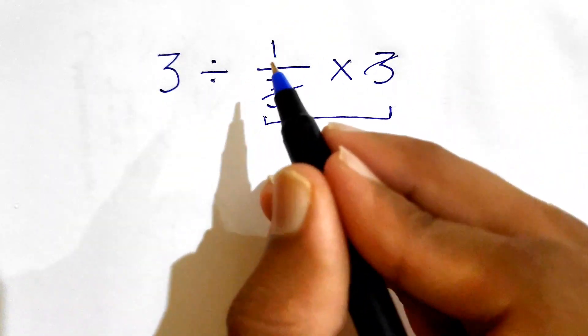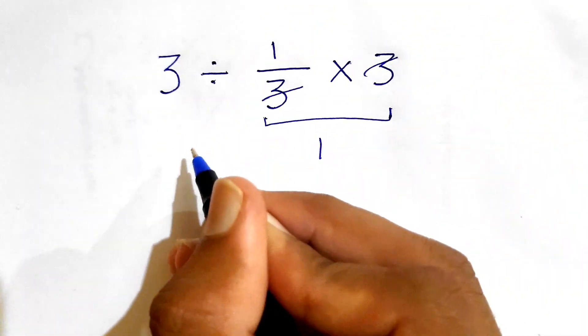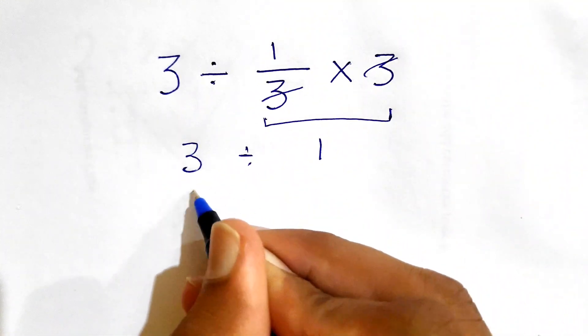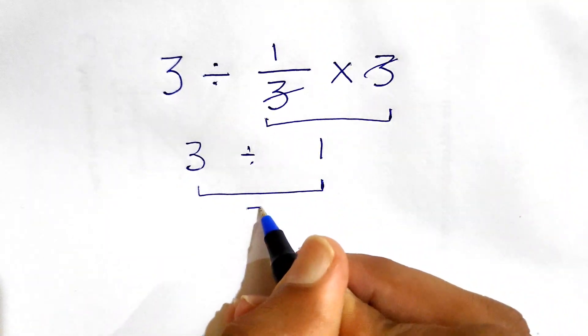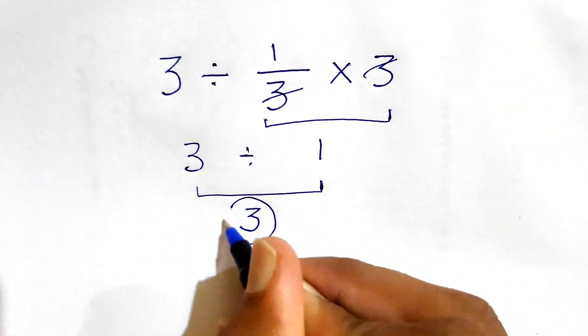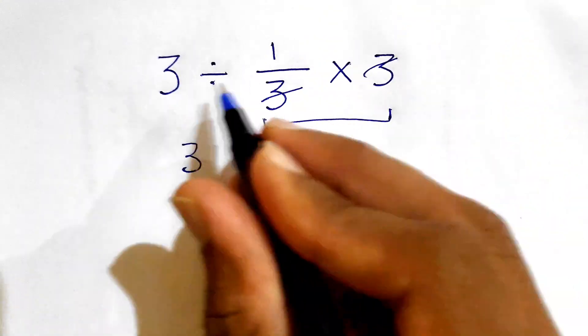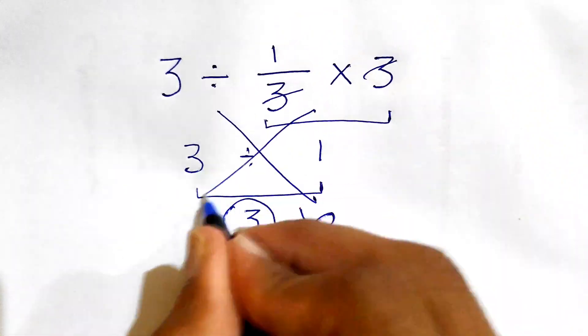So they are only left with this 1, and then they'll divide 3 divided by 1, which gives the answer as 3. But if you think this is the correct answer, you need to keep watching this video till the end because this is incorrect and this method is totally wrong.